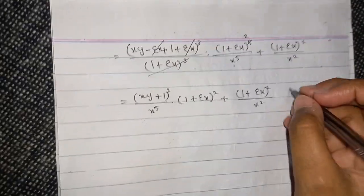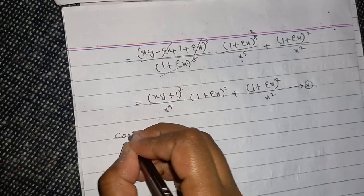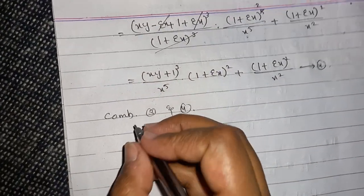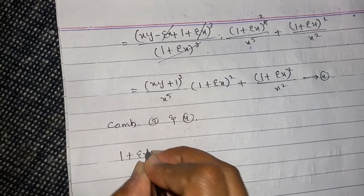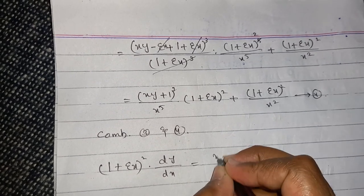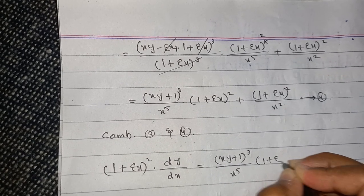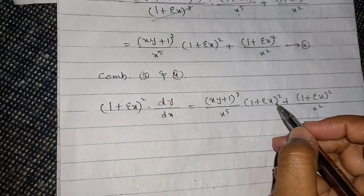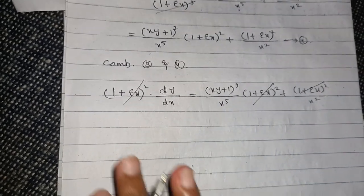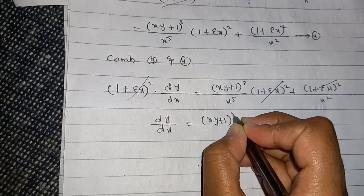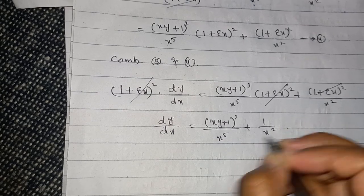Call this equation number 4. Combining equation 3 (from the LHS) and equation 4 (from the RHS): (1 + epsilon*x)^2 times dy/dx equals (x*y + 1)^3 divided by x^5 times (1 + epsilon*x)^2, plus (1 + epsilon*x)^2 divided by x^2. Taking (1 + epsilon*x)^2 as common, it cancels from both sides, leaving dy/dx equals (x*y + 1)^3 over x^5 plus 1 over x^2.